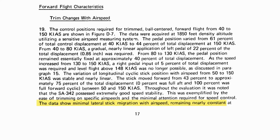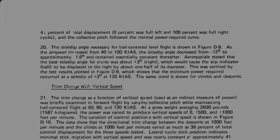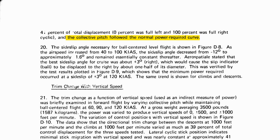The report mentions pretty much all of this: lateral stick remains stationary at about 41 percent, it exhibits very good — actually extremely good — speed stability, longitudinal stick moves forward almost linearly with airspeed above 50 to 60 knots, and the collective follows the typical power-required curve.